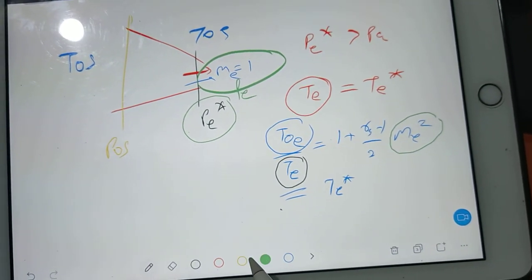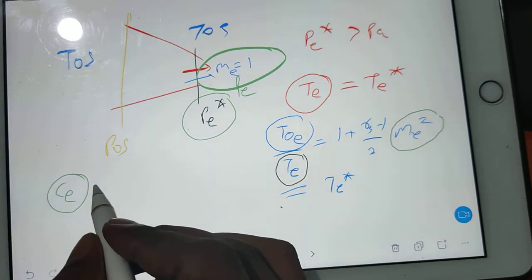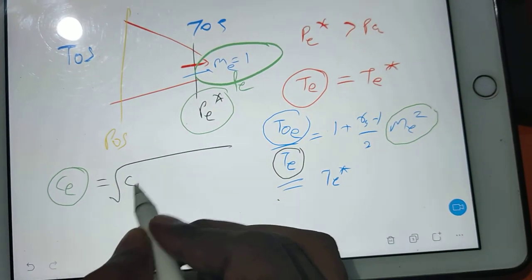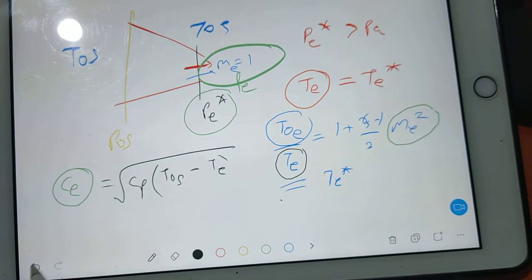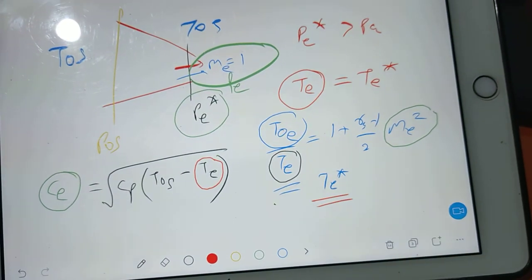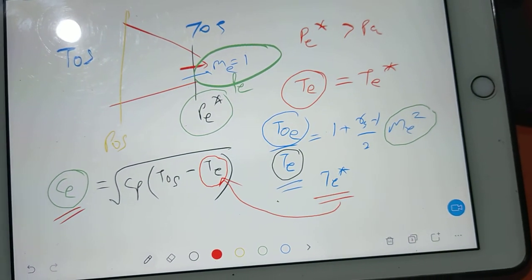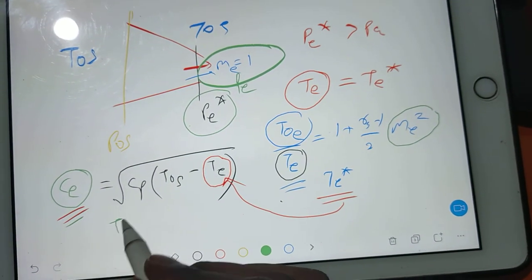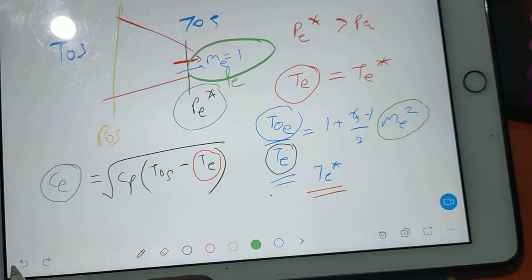Once you got te star, then you got your exit velocity. How? Exit velocity is nothing but square root of cp bracket t not 5 minus te. So you have to decide what is your te value. Right now we got te star, so this te star you will substitute here and you will be finding out your exit speed. And once exit speed is done, then we can find out thrust and so on. So first you understand, we have problem with te.